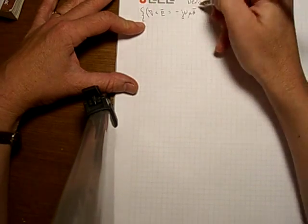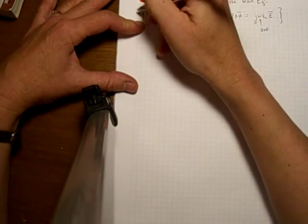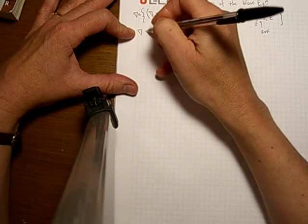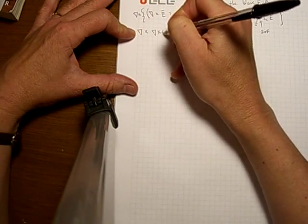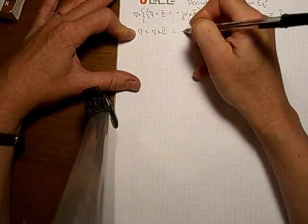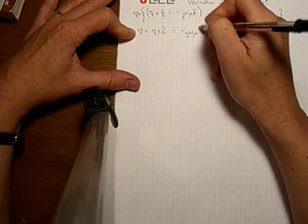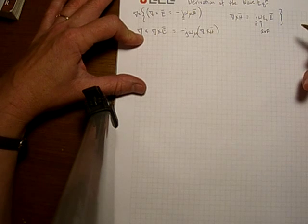The first thing that we're going to do is take this equation, this whole equation, and we're going to take the cross product of it. So this is going to be the curl of the curl of the electric field is going to be minus j omega curl of h. We've taken the curl of both sides.